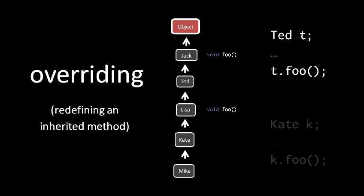If we have a Kate reference k and then at some point we assign some object to k and then invoke k dot foo, well the rule is still that it matters what kind of actual object at runtime is being held in Kate, but because a Kate reference is always going to hold either a Kate or a Mike object, in this case we know that it's always going to invoke the foo defined in Lisa, because Kate and Mike both inherit the foo defined in Lisa.